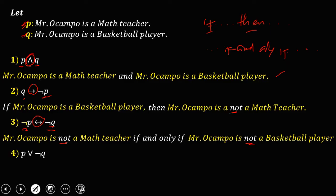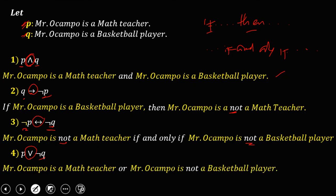For this equation, P disjunction not Q. So P: 'Mr. Ocampo is a math teacher,' then this disjunction — that's 'or' — then not Q: 'Mr. Ocampo is not a basketball player.' So this is how to create a compound statement or a compound proposition.